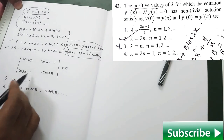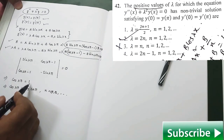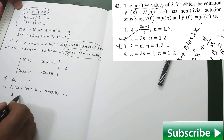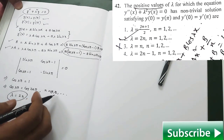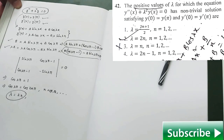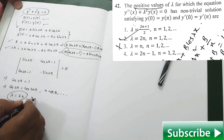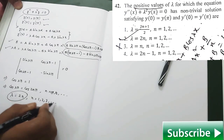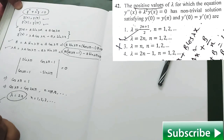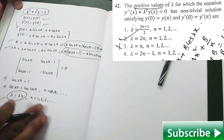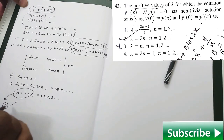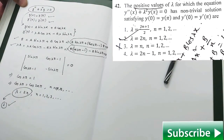Performing the calculation gives cos(λπ) equal to 1, which implies λ equal to 2n, where n equals 0, ±1, ±2, and so on. Since the question asks for positive values of λ for which the equation has non-trivial solutions, n goes 1, 2, 3, and so on. This corresponds to the second option, which is the correct answer. The other three options are obviously false. Thank you.